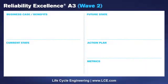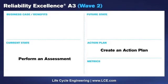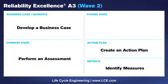Wave two is about determining the current state, and the way to do that is by performing an assessment — a reliability excellence assessment. From that, we can create an action plan on what actions need to be taken, develop a business case, and identify measures so that we know if we're making progress or not. And throughout that assessment process, reinforce those best practices that we learned during wave one education.